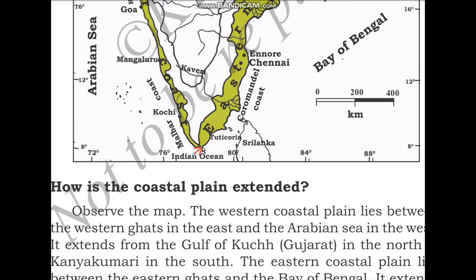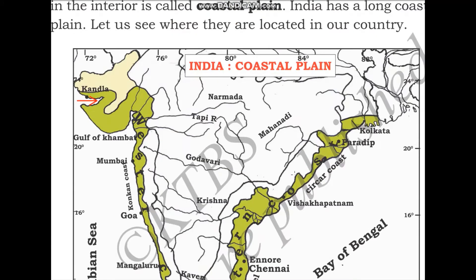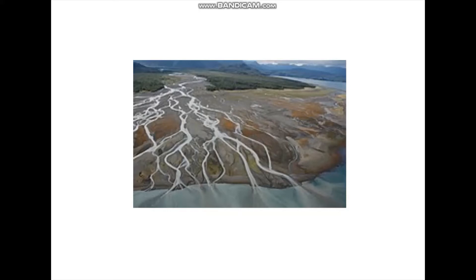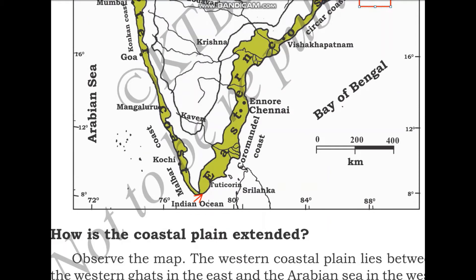The eastern coastal plains lie between the Eastern Ghats and the Bay of Bengal. They extend from the Gangetic Delta in the north to Kanyakumari in the south. The Gangetic Delta is the place where the river Ganga drains into the Bay of Bengal. A delta is a place where a river drains into the ocean, where sediment carried from the river's origin gets deposited.